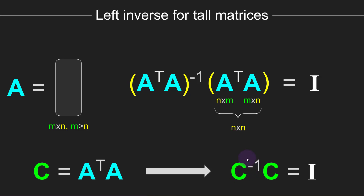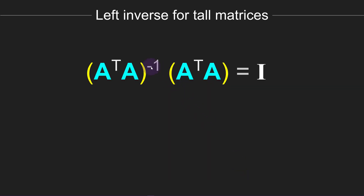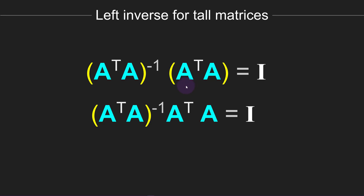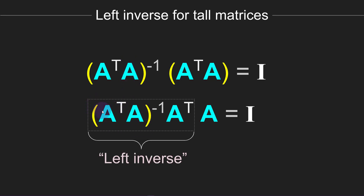Matrix C can have an inverse if it is square and full rank. The parentheses around the inverse are necessary because I'm inverting the matrix product. However, the other parentheses are not necessary — just there for aesthetics. We can get rid of those and regroup the expression. We were thinking of it as two objects; now we call the three matrices together as one object, with matrix A as a separate object. This is what's called the left inverse.